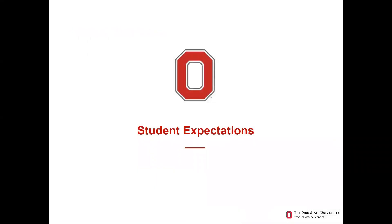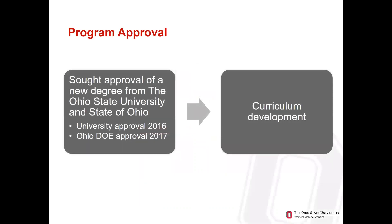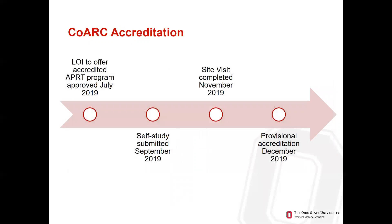Discussing student expectations: our program received university approval in 2016 and Ohio Department of Education approval in 2017, allowing us to develop the curriculum and work with the College of Nursing and College of Medicine. Our COARC accreditation started with our letter of intent, approved in July of 2019. We completed our self-study in September of 2019, had a site visit in November, received provisional accreditation in December, and this allowed us to admit our first cohort of students who began in spring semester of 2020.